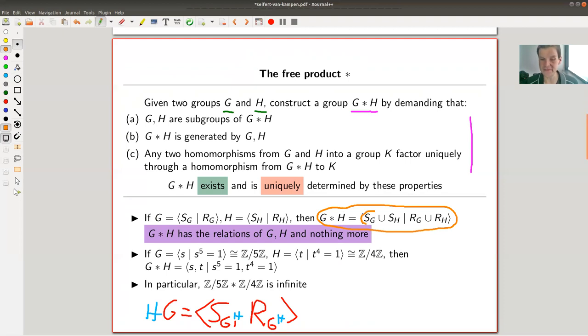If H is given by a certain number of generators, certain number of relations, then the free product is really just the naive construction. It's a free object which is generated by exactly the elements from G and the elements from H by the same generators. Naively, you just take exactly the union of those generators, and you impose a minimal possible number of relations, namely only the relations from G and H and nothing else.